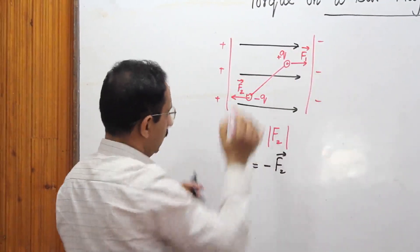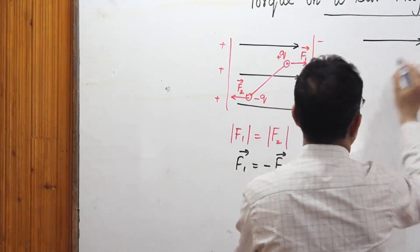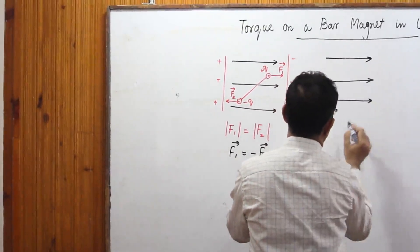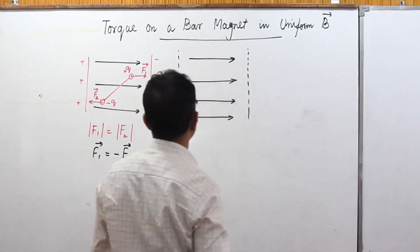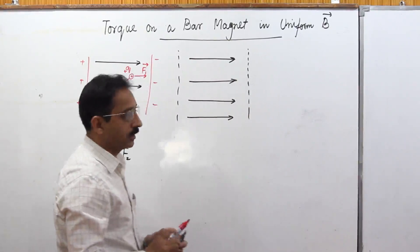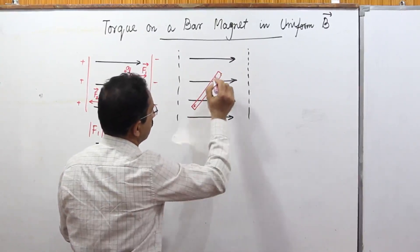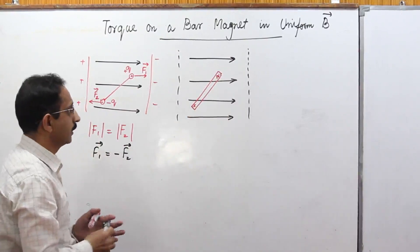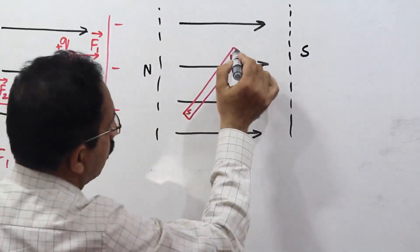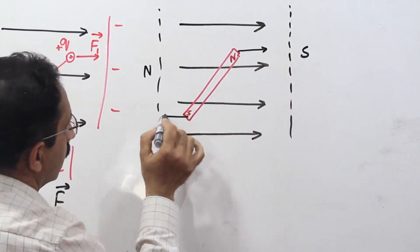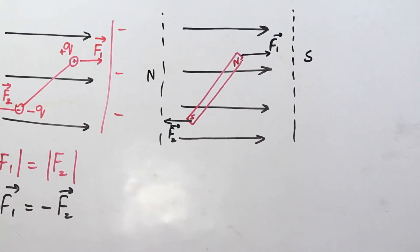By analogy, instead of an electric field, let us think of a uniform magnetic field represented by equidistant parallel straight lines. A bar magnet is placed in this region — say this is the south pole and this is the north pole. The north pole is attracted towards the south side and the south pole is attracted towards the north side. If we call these forces F1 and F2, they are again equal and opposite.